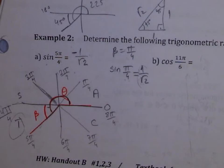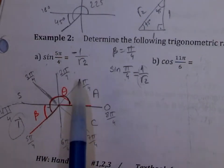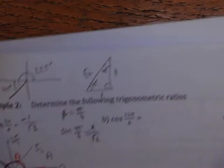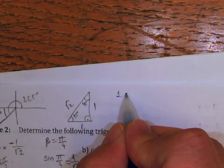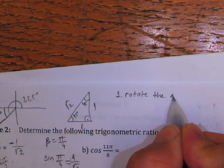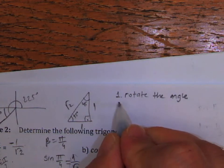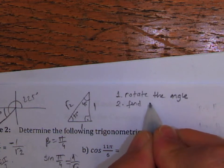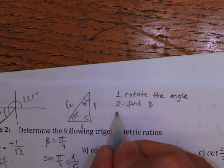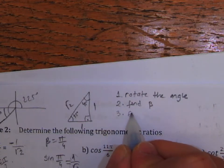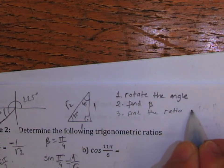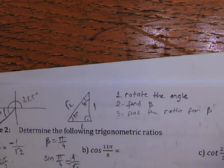To summarize the steps: step 1 — rotate the angle; step 2 — find the related acute angle; step 3 — find the ratio for the related acute angle; step 4 — use CAST to find the ratio for theta.